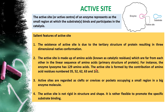The active site is formed by the contribution of amino acid residues 35, 52, 62, 63, and 101. The third point is: the clefts, grooves, or pockets occupy a small region in the big enzyme molecule. This is a big enzyme, and a small portion of it takes a curve — that position is called active site.